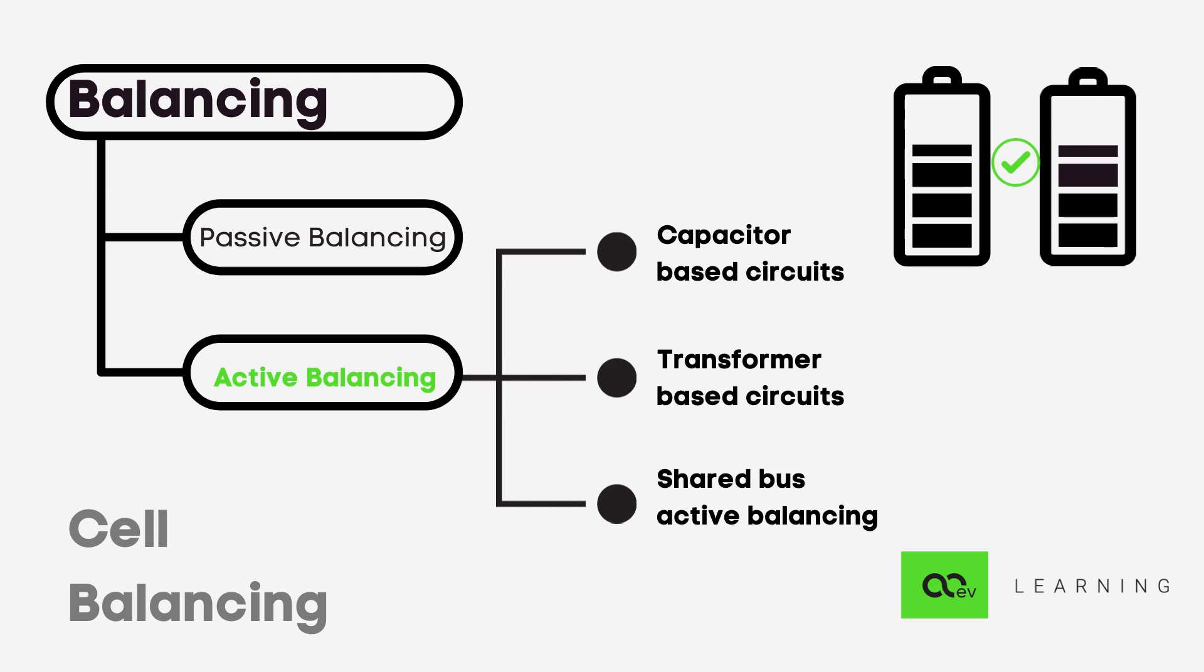Summing up these three methods, the best and most used is shared bus active balancing, which is also cost effective. Capacitor-based circuits are slow and thus ineffective. Transformer-based circuits are better than capacitive but tend to be heavy and expensive.